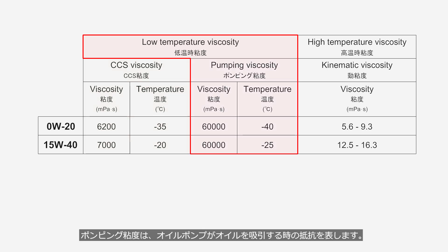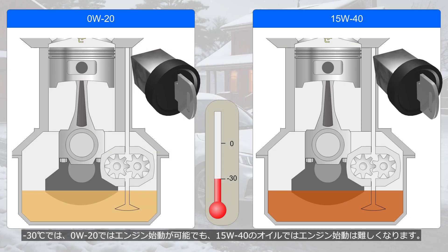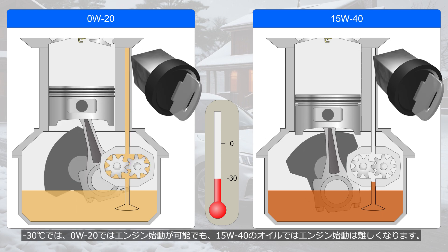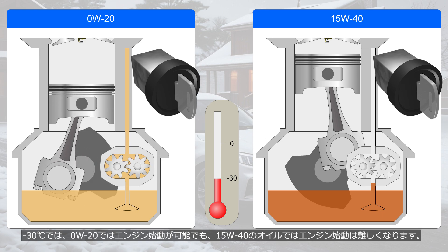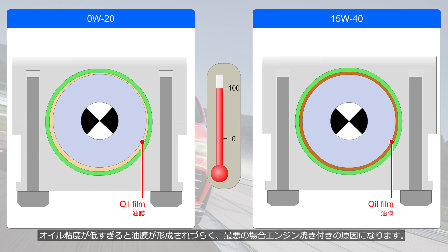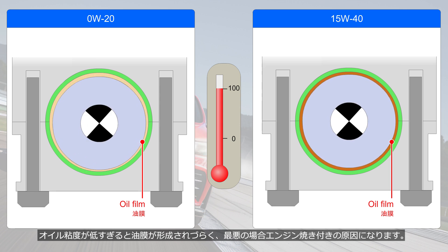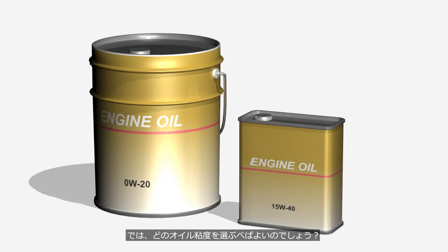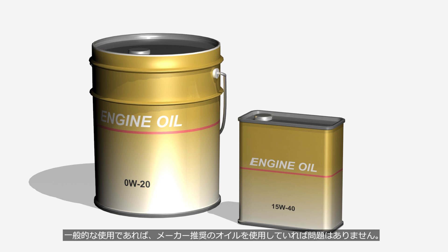Pumping viscosity indicates the resistance the oil pump faces when drawing in oil. The viscosity of 0W20 at minus 40 degrees Celsius is the same as that of 15W40 at minus 25 degrees Celsius. At minus 30 degrees Celsius, while it is possible to start the engine with 0W20, it would be difficult to do so with 15W40. Viscosity at high temperatures is expressed as kinematic viscosity at 100 degrees Celsius; if the oil viscosity is too low, it becomes difficult to form an oil film, which in the worst case can lead to engine seizure. For general use, there is no problem as long as you use the oil recommended by the car manufacturer.